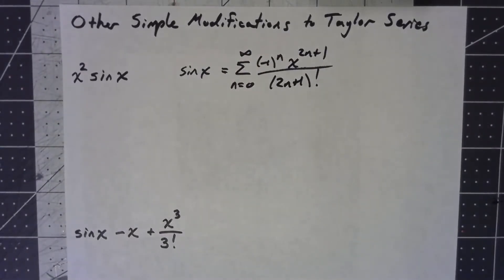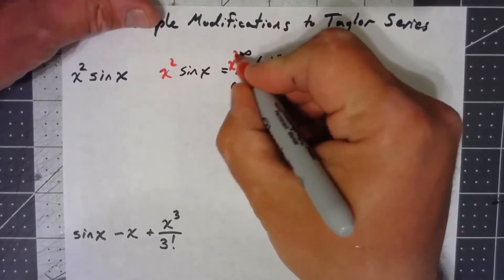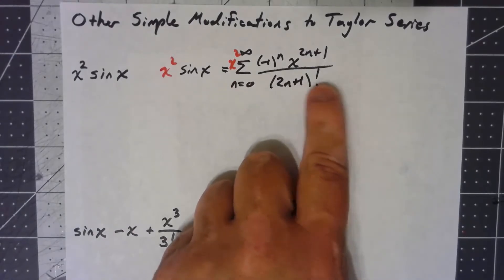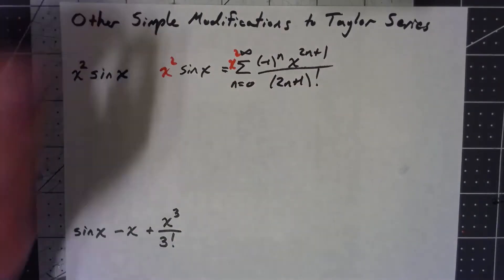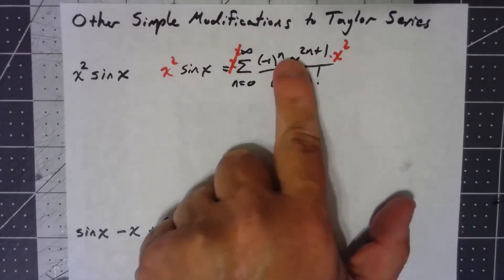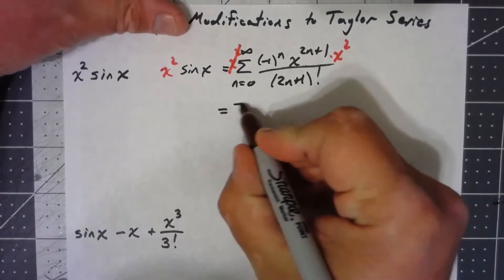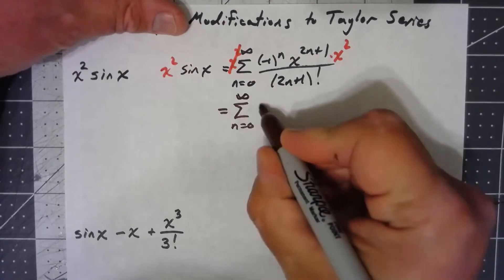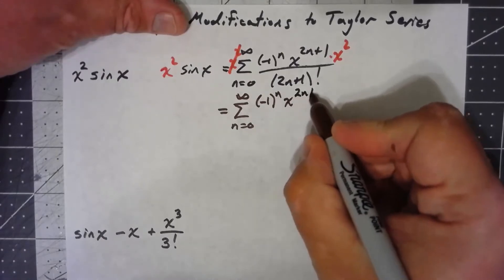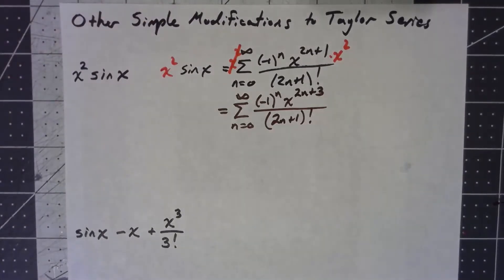Well, what happens if I multiply both sides here by x squared? That x squared will distribute to every term on the inside, so I may as well just move it to the inside, and then I've just got an x to a power times x to a power, so if I just add the powers, I'm done. 2n plus 1 plus another 2 gives me x to the 2n plus 3, and there we have it, nothing to it.